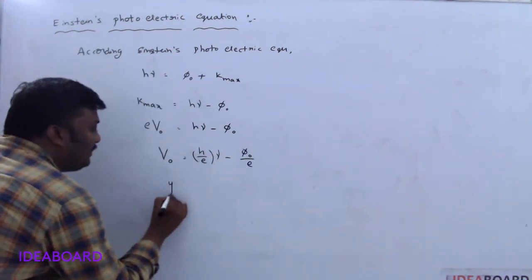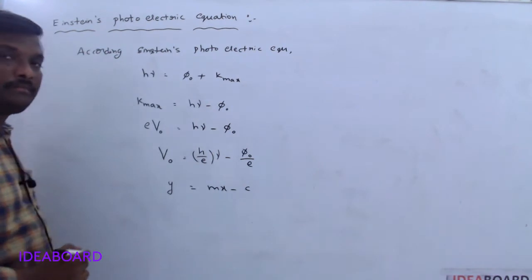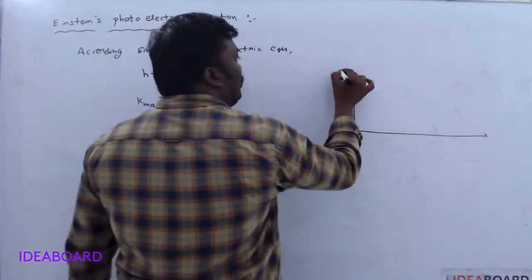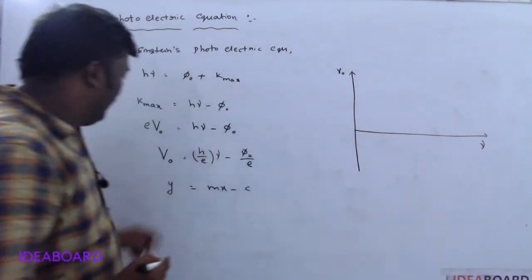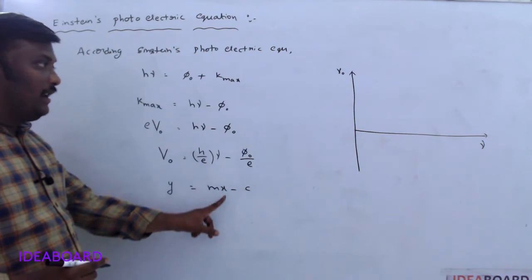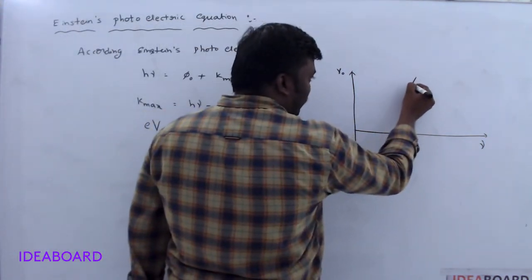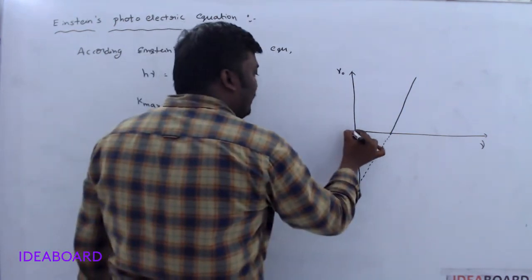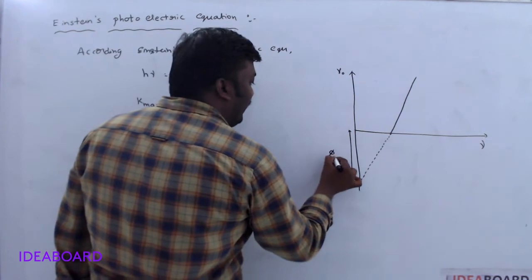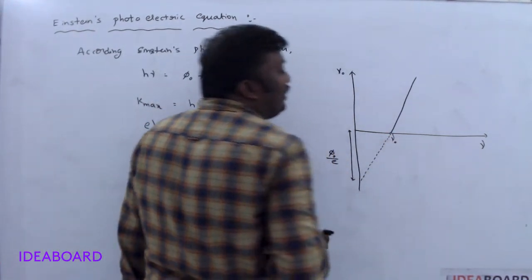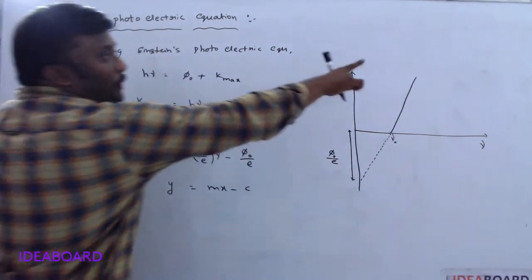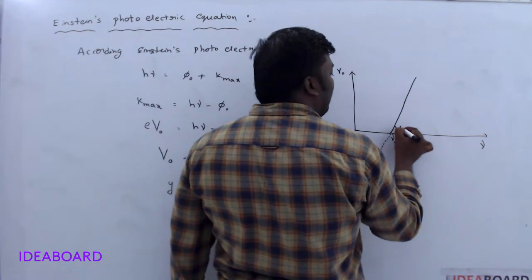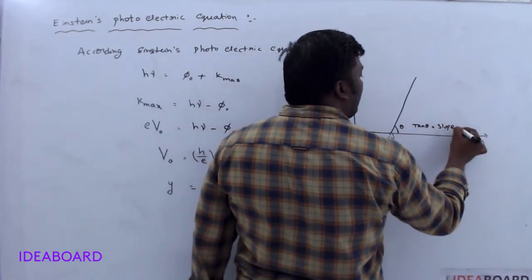This equation is comparable with y = mx − c. If you draw a graph between stopping potential and frequency, stopping potential is taken along the y-axis and frequency along the x-axis. It is a straight line having some intercept on the negative y-axis. This intercept value is φ₀/e, and the point on the x-axis is the threshold frequency. The slope of the line is h/e, so tan θ = slope = h/e.